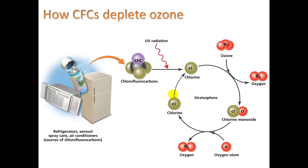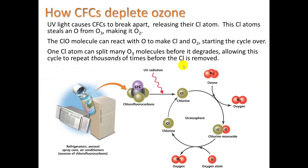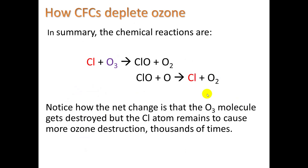How do CFCs deplete ozone? One chlorine atom combines with one ozone molecule — it pulls away one of the oxygens to form chlorine oxide and leaves behind regular oxygen. That chlorine oxide can then combine with another oxygen atom to form a free chlorine atom plus oxygen. This free chlorine can then go back and start the process again — a single chlorine atom can destroy multiple ozone molecules, in fact thousands of times.